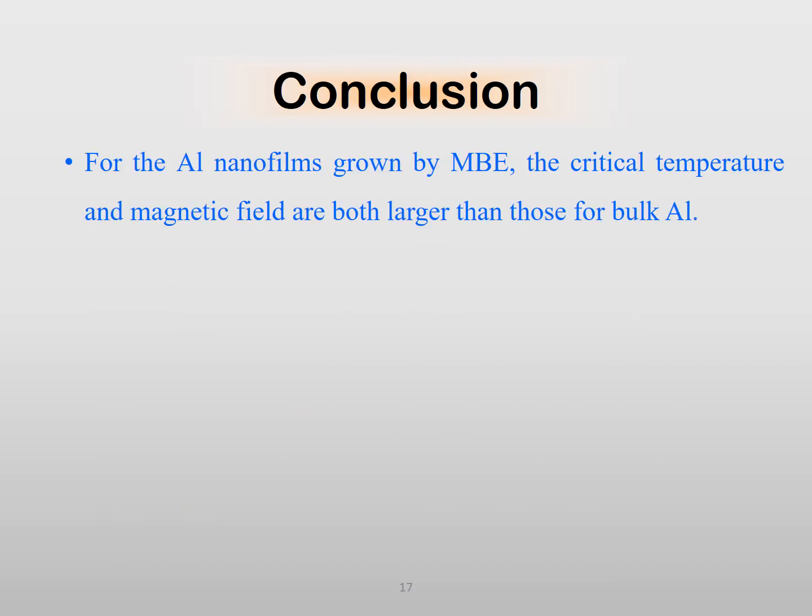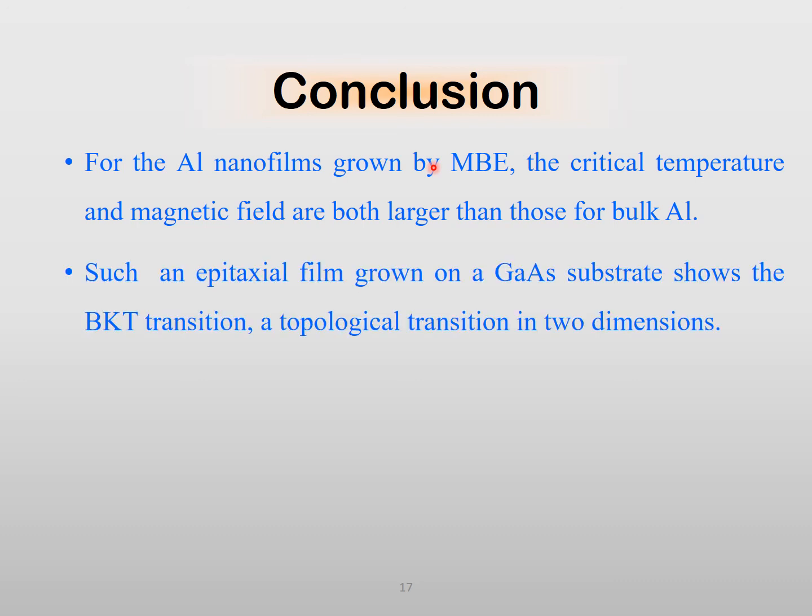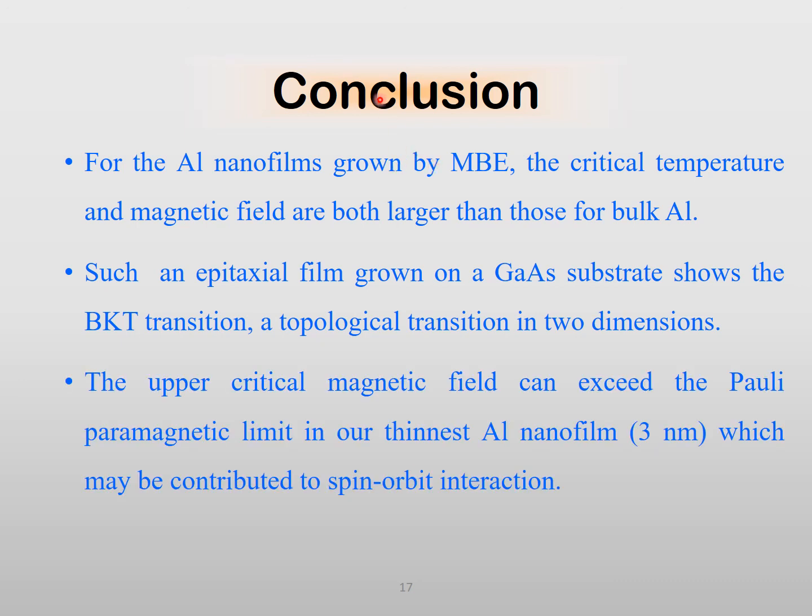In summary, we have studied MBE-grown aluminum nanofilms. Both the critical temperature and upper critical magnetic field are higher than those of bulk aluminum. This is perhaps useful for superconductivity-related applications. We have observed clear experimental evidence for the BKT transition in all the aluminum films. The BKT transition temperature and the BCS transition temperature are close. Finally, we have seen violation of Pauli paramagnetic limit in the thinnest device. Just would like to mention 3 nanometers is the thinnest for which the sample conducts at room temperature. Thank you very much for your kind attention.